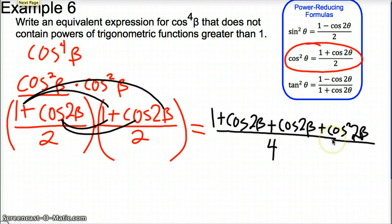Okay, so it looks like I haven't met my goal yet, because my goal is to have no powers greater than 1. And with this value right here, I have a cosine squared of 2 beta, so I am almost to my goal, but not quite there.